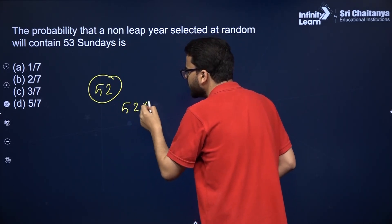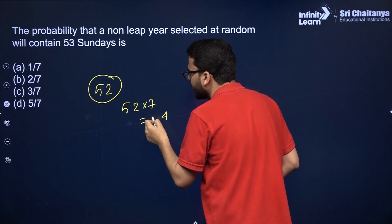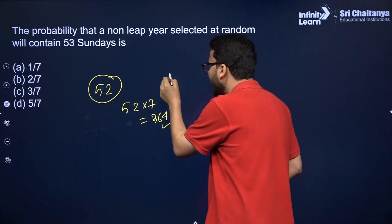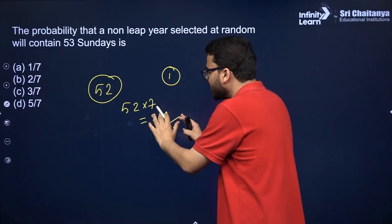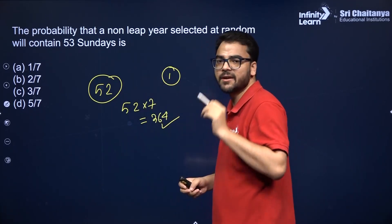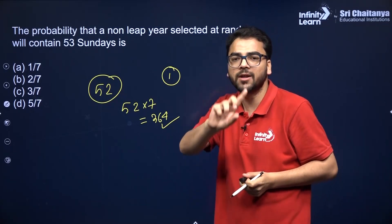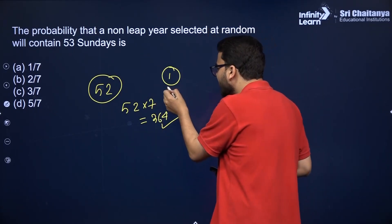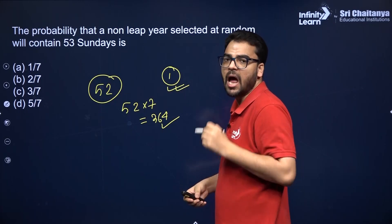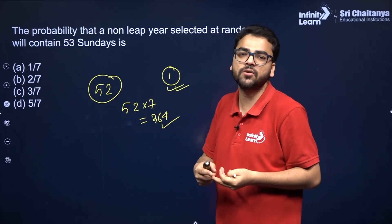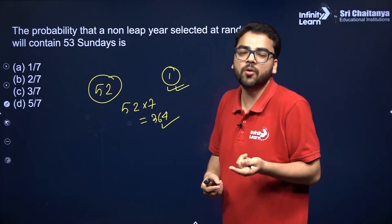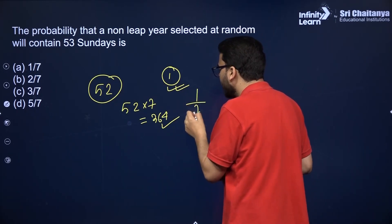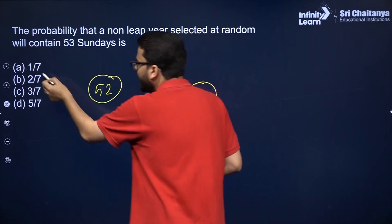52 into 7 gives 364, so 1 extra day is left. For 364 days, 52 Sundays are fixed. Basically you have to find the probability that this 1 extra day is a Sunday, so that you get 53 Sundays. This extra day has to be Sunday out of the 7 days of a week — Sunday, Monday, Tuesday, Wednesday, Thursday, Friday, Saturday. So the probability of getting Sunday is 1 out of 7.